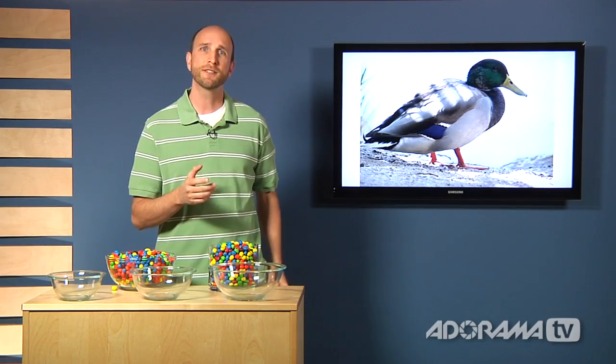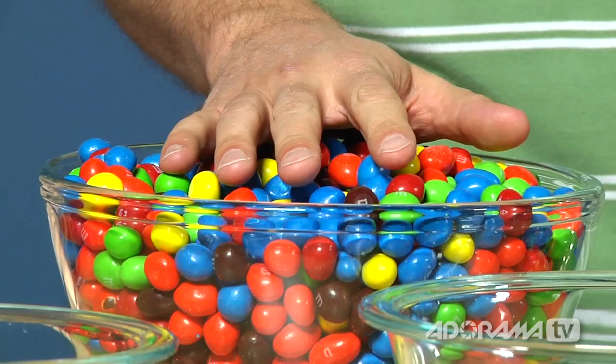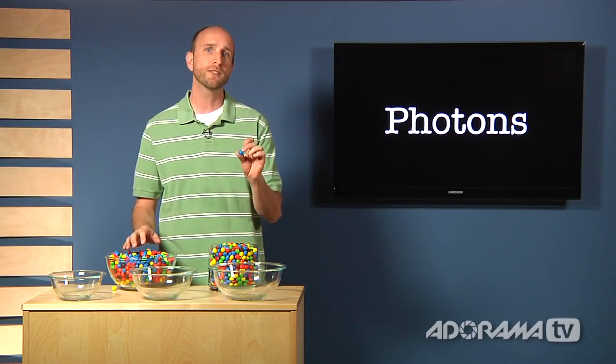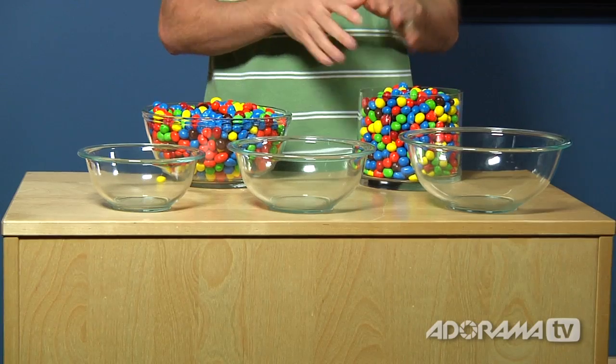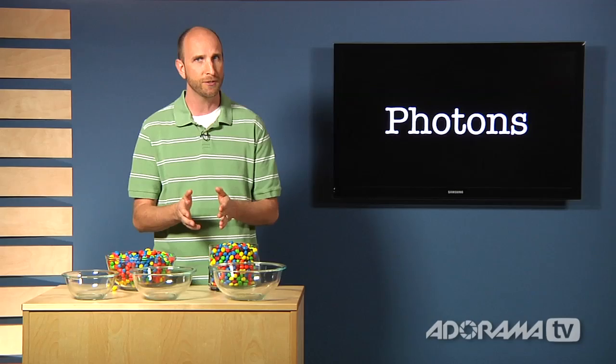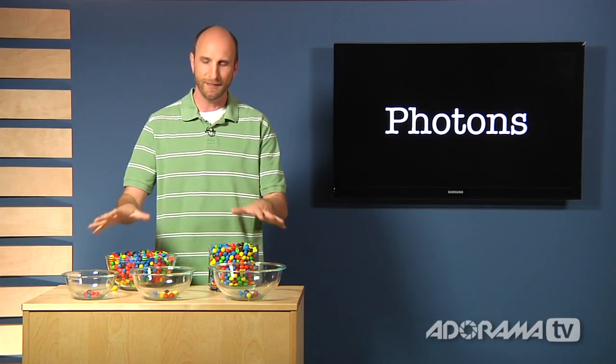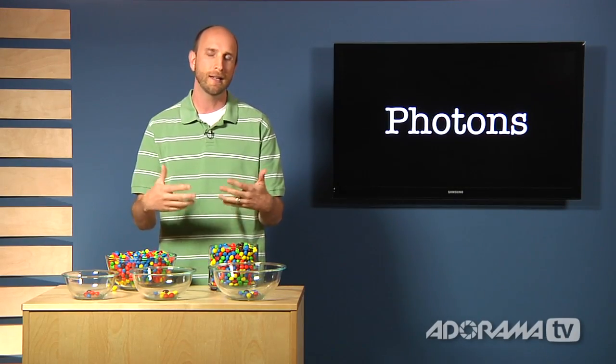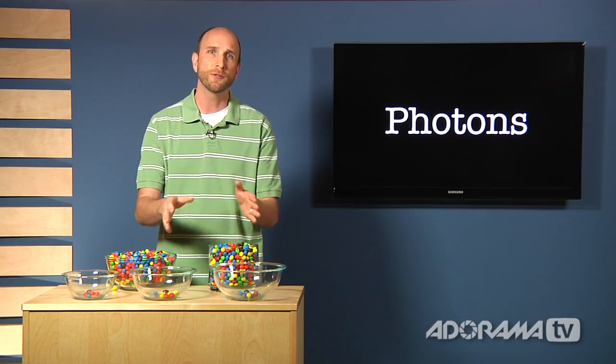Light travels in little bundles of energy, and those bundles of energy are called photons. The photosites on our sensor measure these photons to determine how bright something is. I have a bunch of little chocolate candies here, and each one of these represents a photon, and I also have some bowls here, and each one of these represents a photosite. The larger the photosite is, the more photons it can measure. That means if we have just a few photons, I'll put a few photons in these. In this instance, we're measuring a very dark image. The sensor can measure all of these photons if that's just a few that we're measuring.